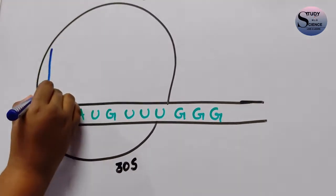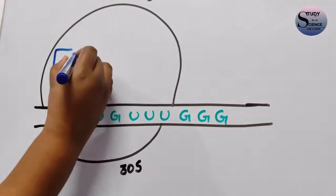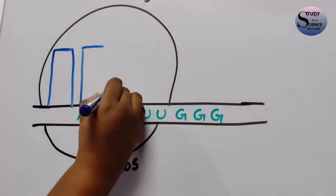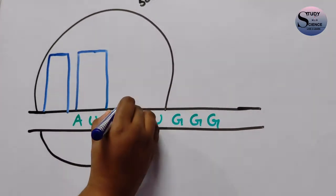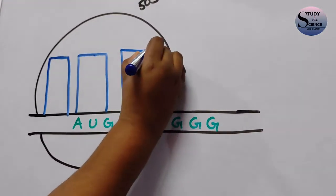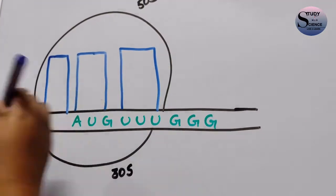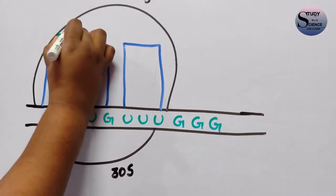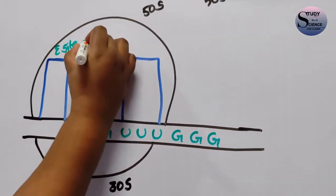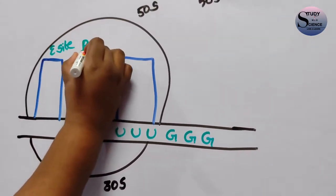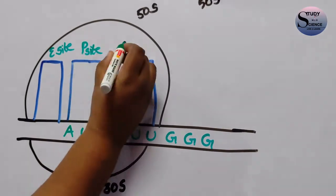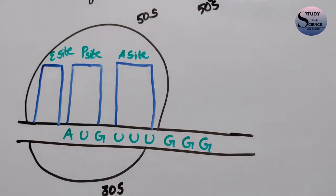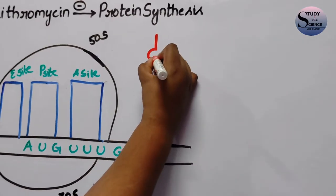There are three subunits present in the 50S ribosome of the mRNA, and these three subunits have specific names. The first one is the E site, which is also called the exit site. The second one is the peptidyl site, also called the P site. The third one is the A site, or acceptor site.